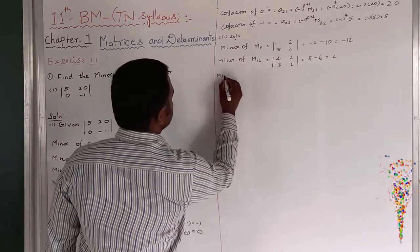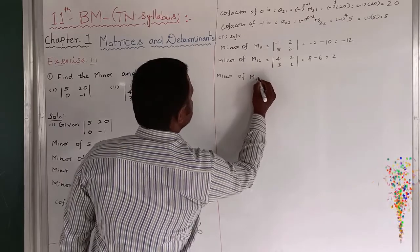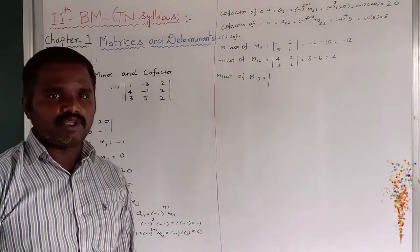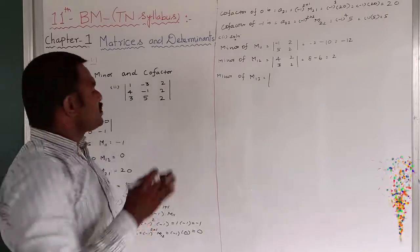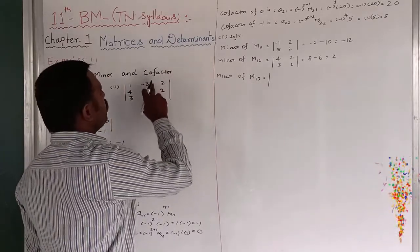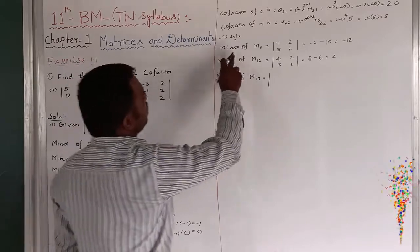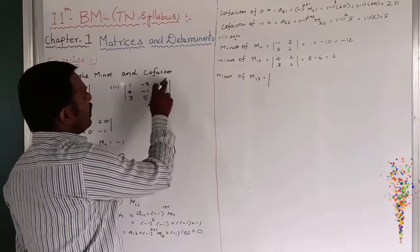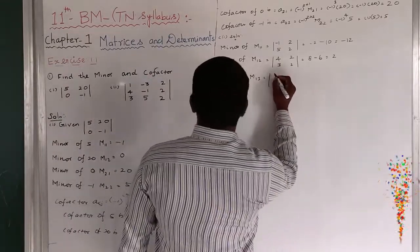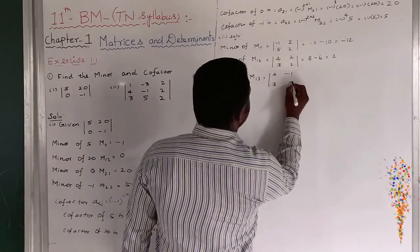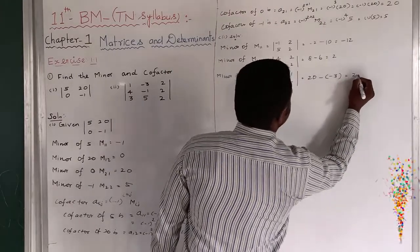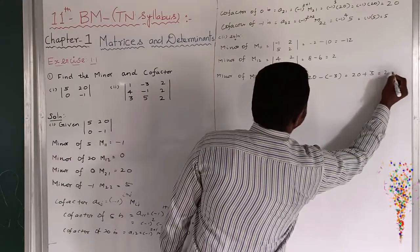Next, minor M13: first row, third column. Remove this row and column. The remaining is 4, minus 1, 3, and 5. So therefore: 4 × 5 = 20, minus (minus 1 × 3) = plus 3. This equals 20 plus 3 = 23.